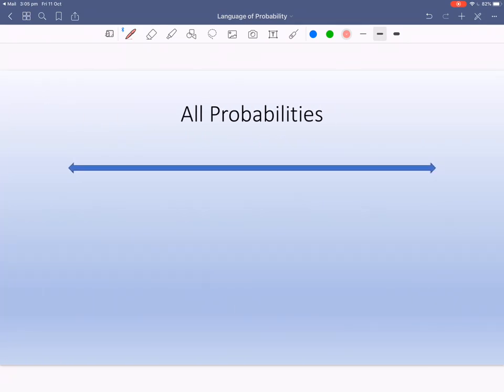All right. So all probabilities can be described between 0 and 1. And I'm going to put here in the middle, which is 50-50. Now, something that's 0 is impossible. And something that's 1 is certain.